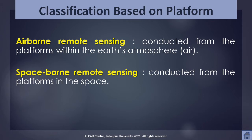First, the classification based on platform. In order for a remote sensor to collect and record energy reflected or emitted from a target or surface, it must reside on a stable platform away from the target or surface being observed. Platforms for remote sensing may be situated on the ground, on aircraft, on balloons, or some other platform within the earth's atmosphere, or on a spacecraft or satellite outside the earth's atmosphere.